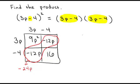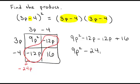So now basically I just have to add together all of my terms that I have in each one of these boxes. This is going to be 9p squared minus 12p minus 12p plus 16, which will be 9p squared minus 24p plus 16.